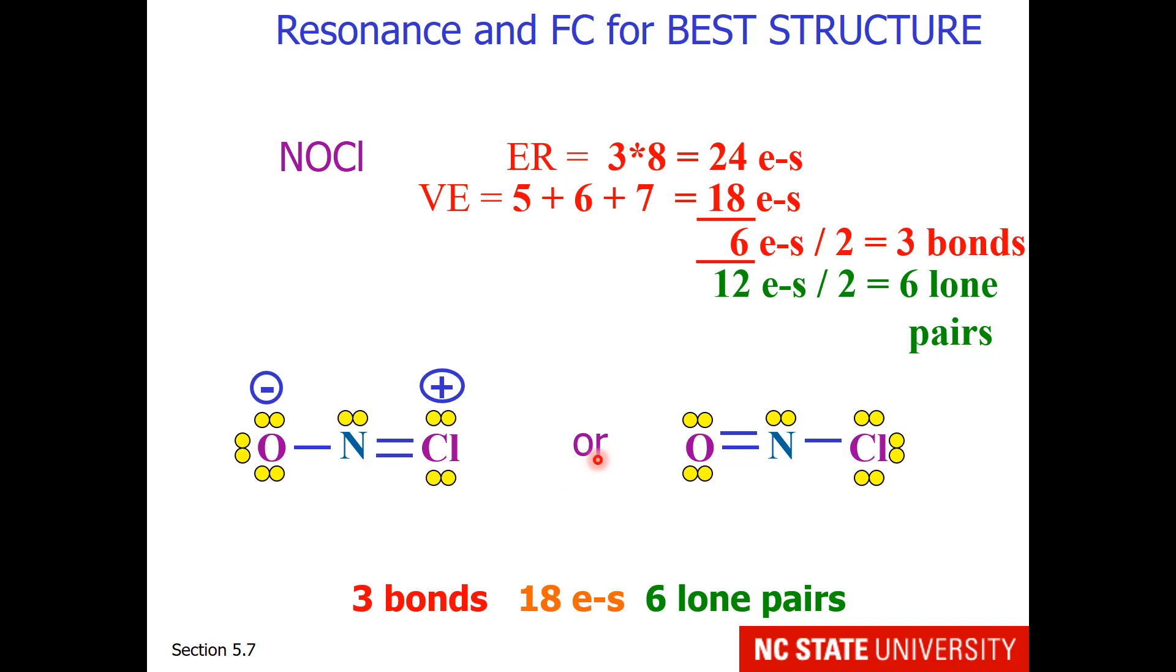One way our options differ is by formal charge. We can have a minus on the oxygen, a 0 on the nitrogen, and a positive on the chlorine, or 0, 0, and 0. Now while oxygen may be happy with a minus formal charge, chlorine is certainly not happy with a plus 1 formal charge. So the preferred structure is this one right here, where all the formal charges are equal to 0.